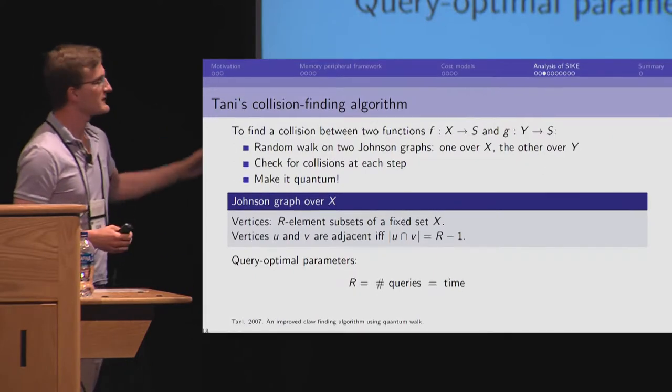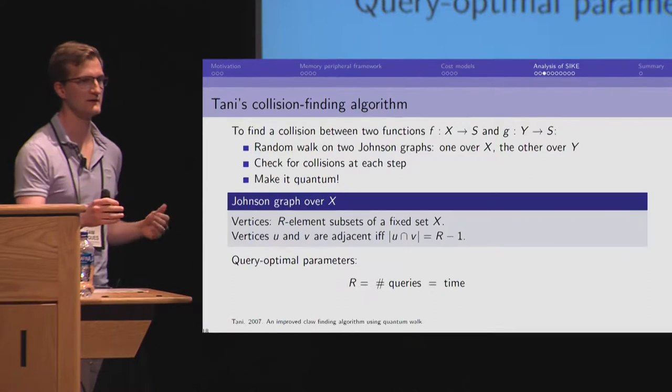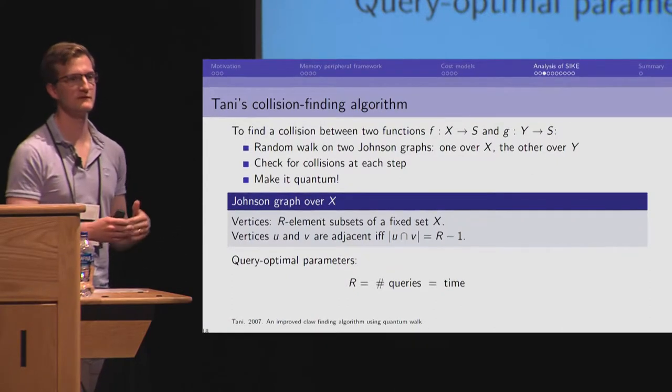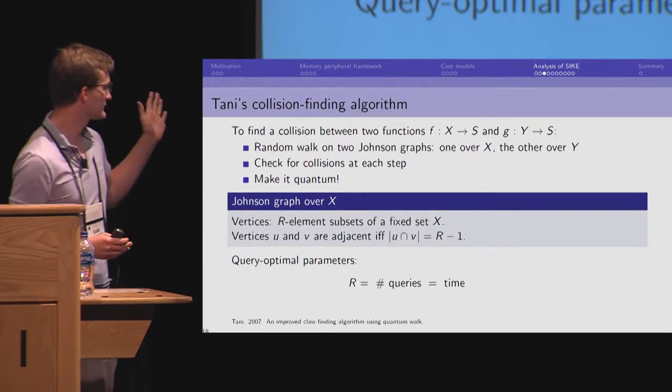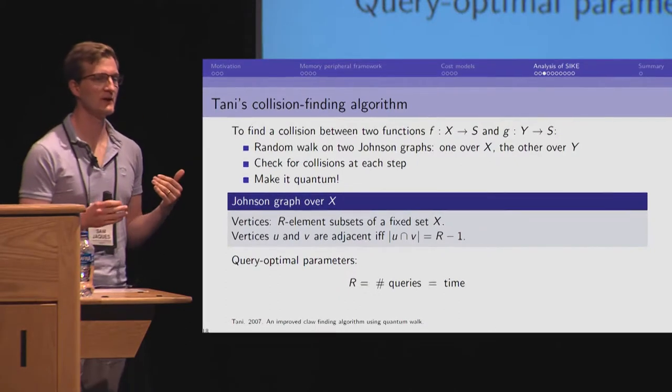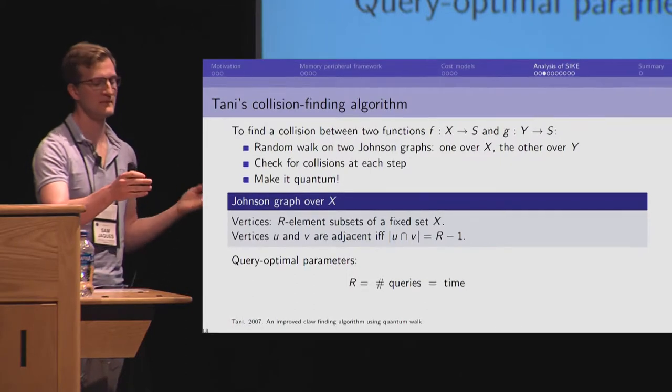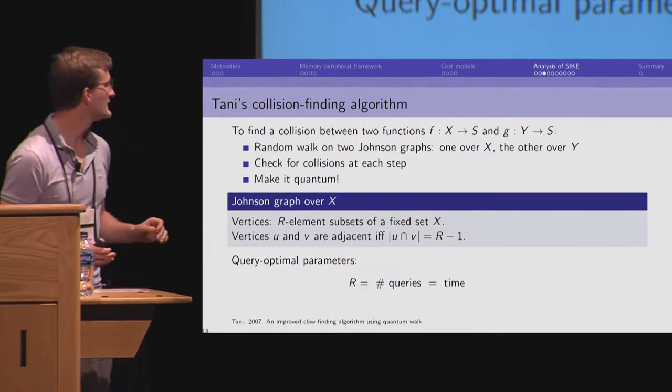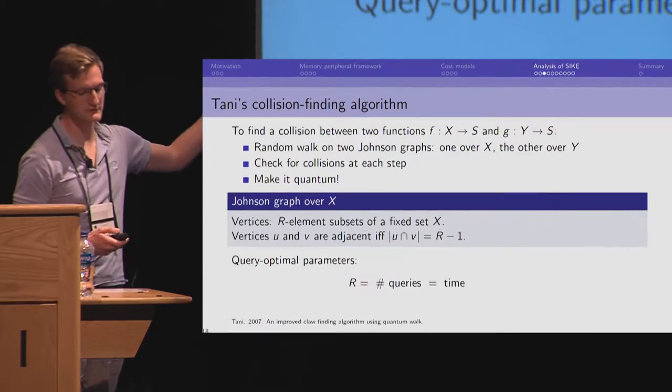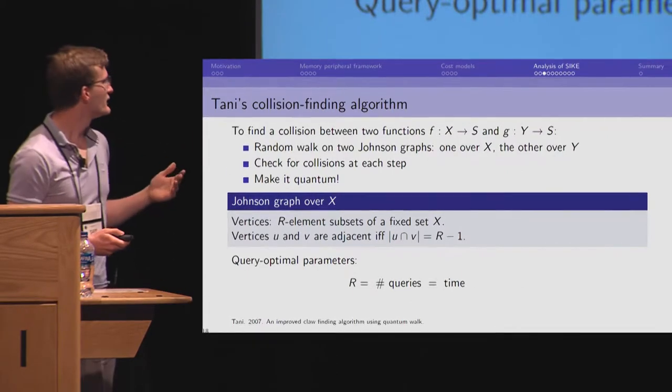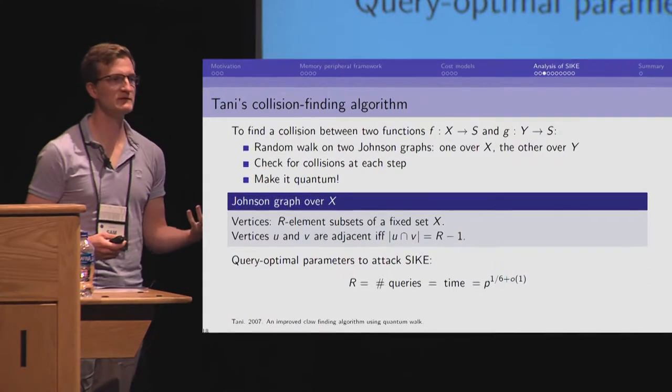So, what happens with this is that the length of the random walk gets faster if the sets are bigger. And Tani optimized for the query optimal where you actually have to balance that with the setup cost to originally construct this list and balance that with the total length of the walk. And this is where the size of the set is proportional to the number of queries, which is proportional to the time. For isogeny-based cryptography, for Psyc, these are all equal to P to the 1/6. So, previously, the security was given as P to the 1/6 for the prime P.